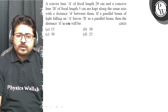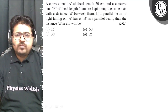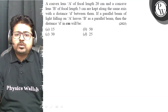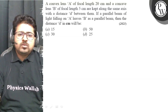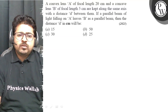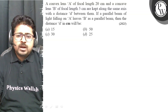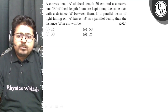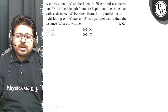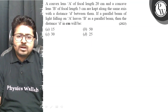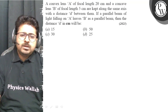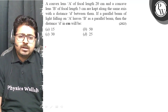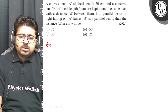A convex lens A of focal length 20 cm and concave lens B of focal length 5 cm are kept along the same axis with the distance D between them. If a parallel beam of light falling on A leaves B as a parallel beam, then find the distance D in cm.